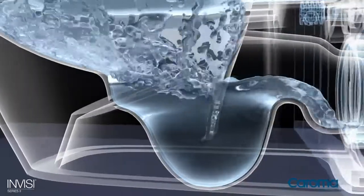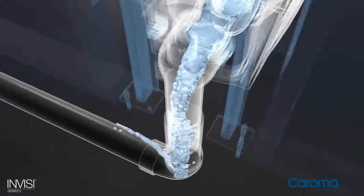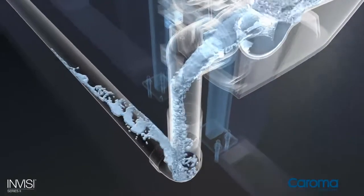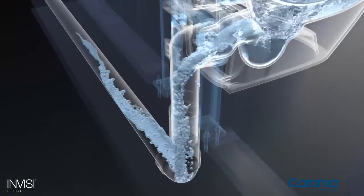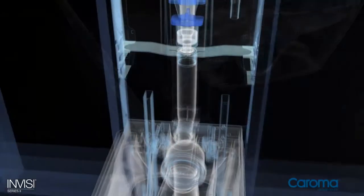Invisi Series 2 delivers the benefits of matched performance, a uniquely integrated approach to flushing, clearing and drainage with a cistern, pan and trap designed to work as one optimized system.